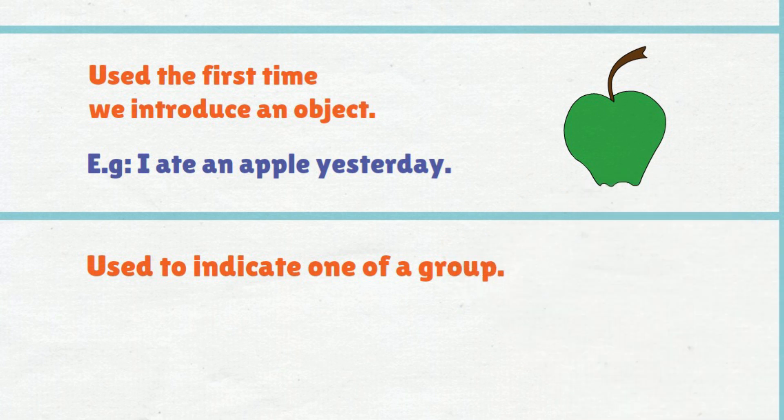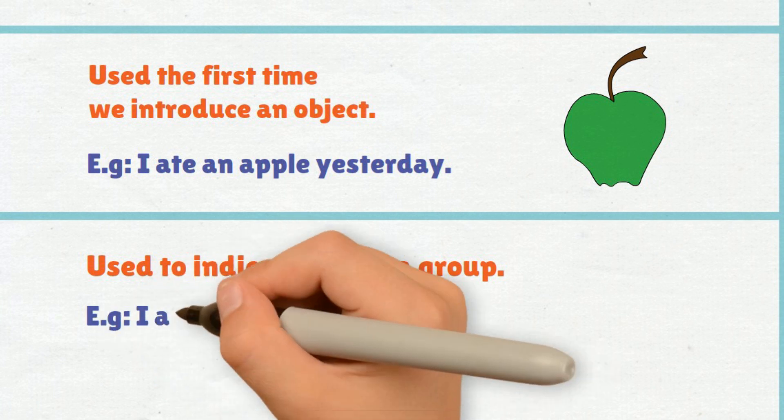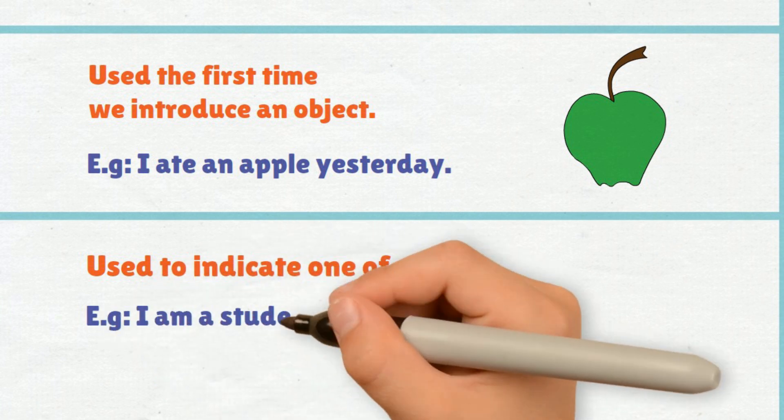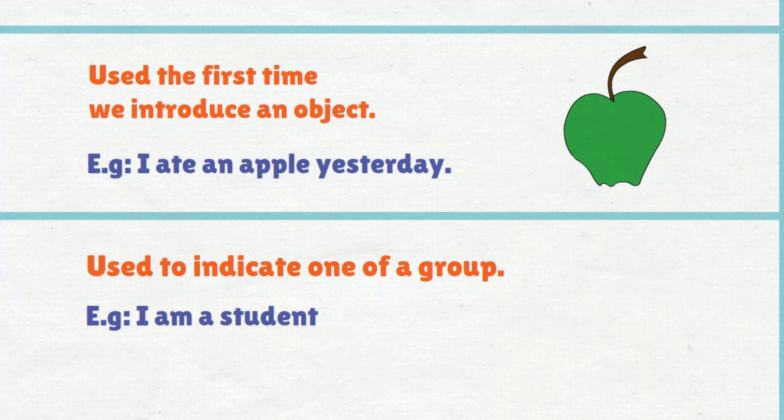A and An are used to indicate one of a group. Example: I am a student.